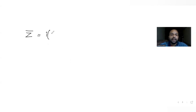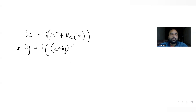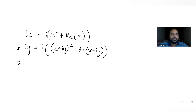The condition given to us says conjugate of z equals i times z squared plus the real part of the conjugate of z. Substituting, we get x minus i·y equals i times (x plus i·y)² plus the real part of (x minus i·y), which is x.